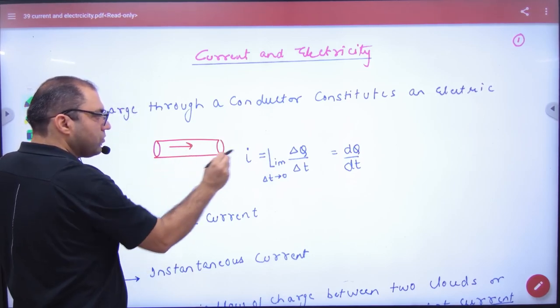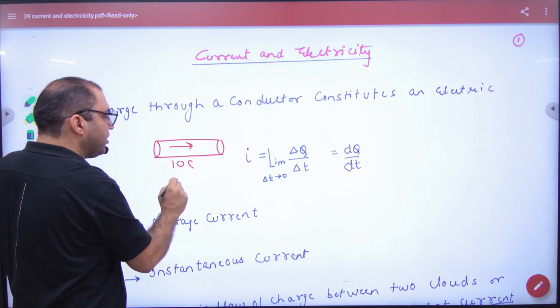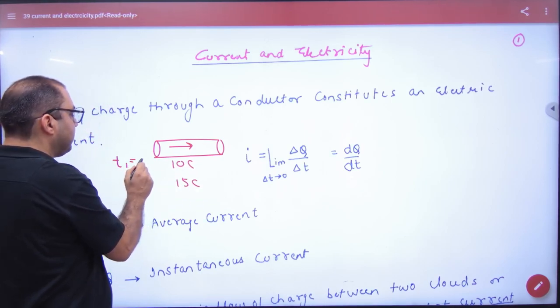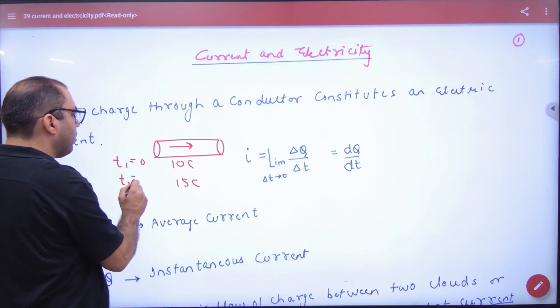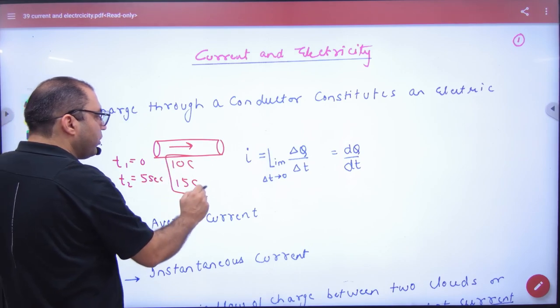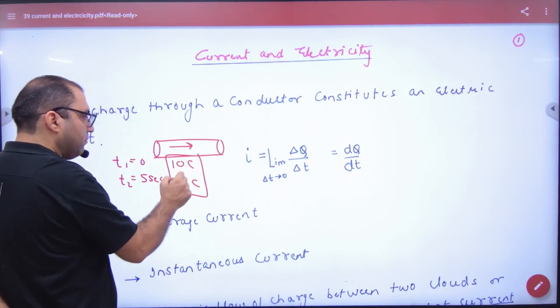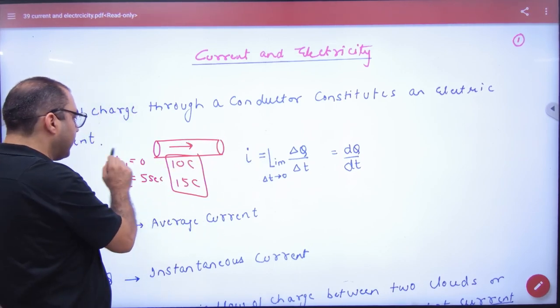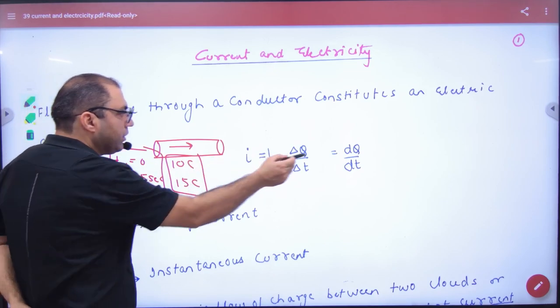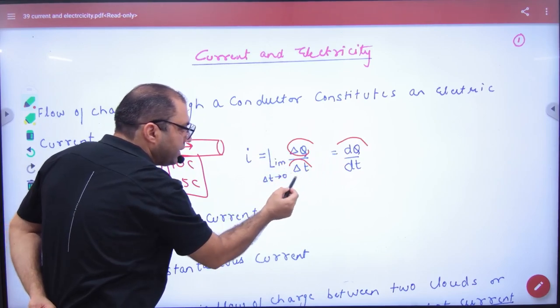Charge value 10 coulombs at time t1, and 15 coulombs at time t2. The time is 0 seconds and t2 is equal to 5 seconds. So delta q is equal to what is the change in charge, then 5. Delta t what is 5, then answer 1. But the problem is delta q by delta t, total change in charge by total time.